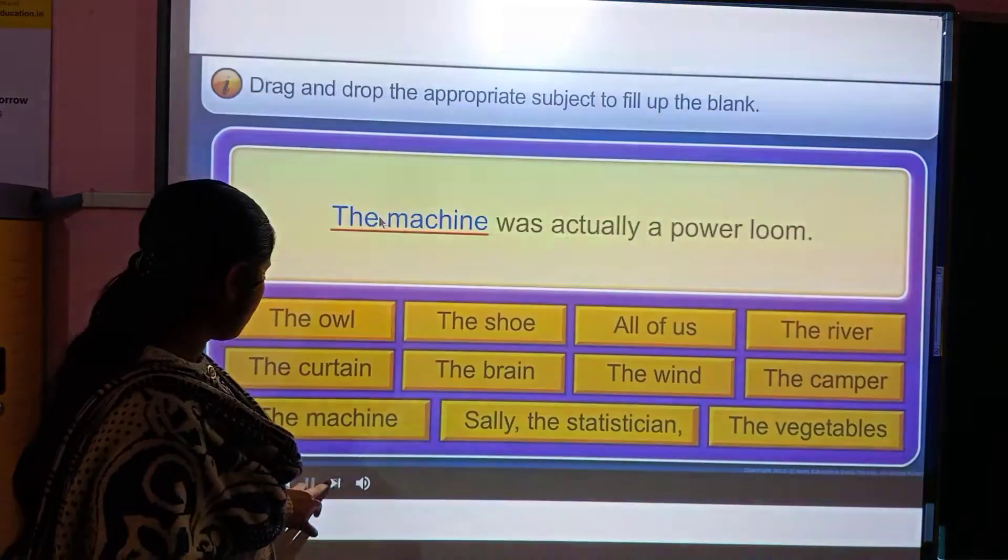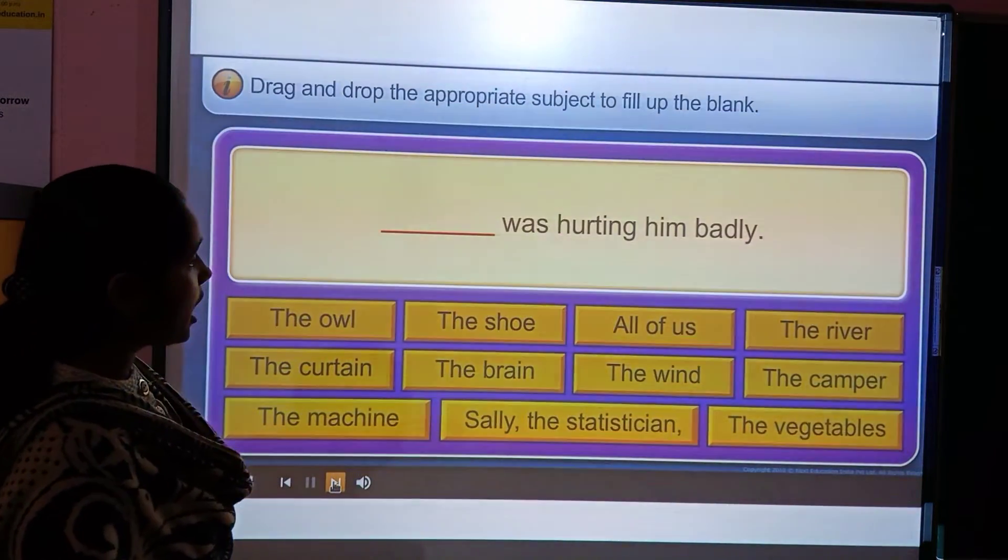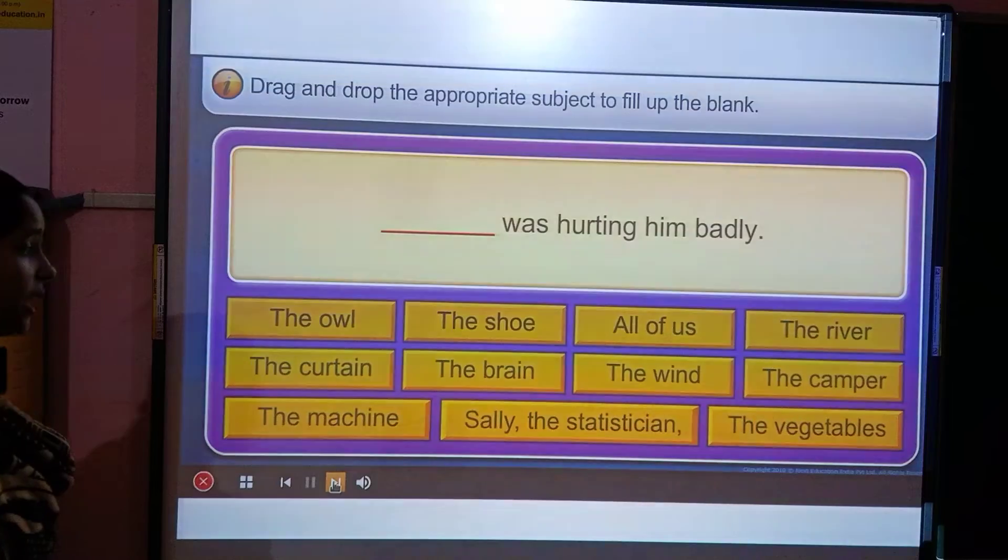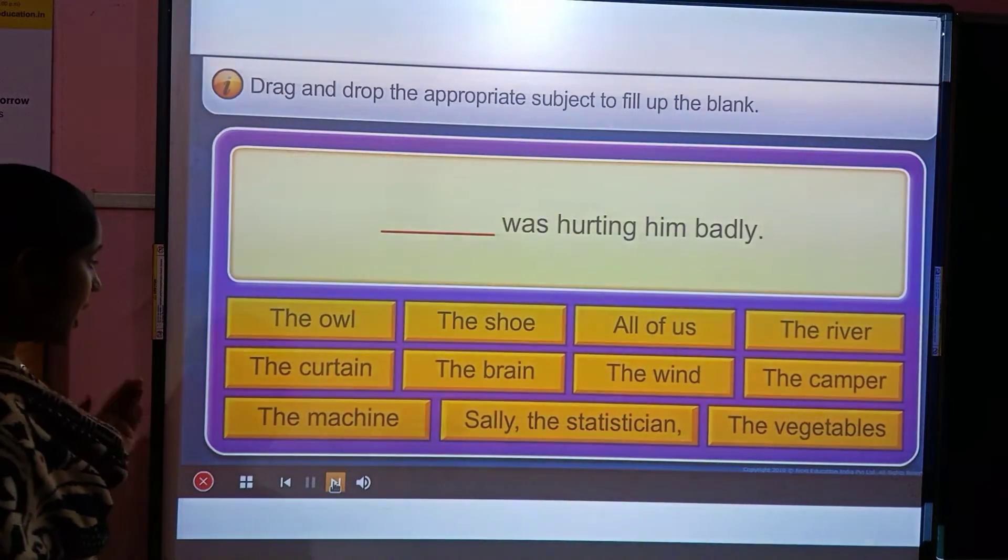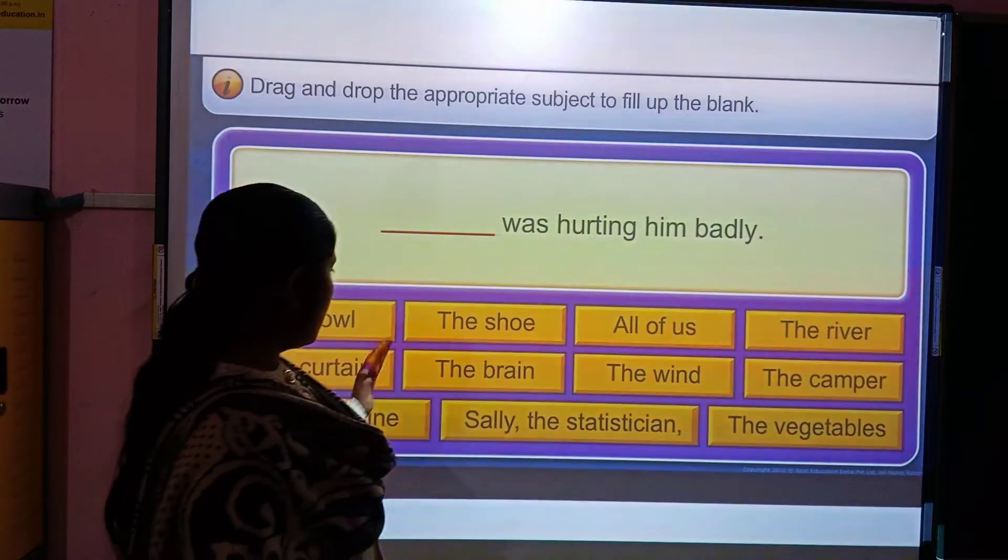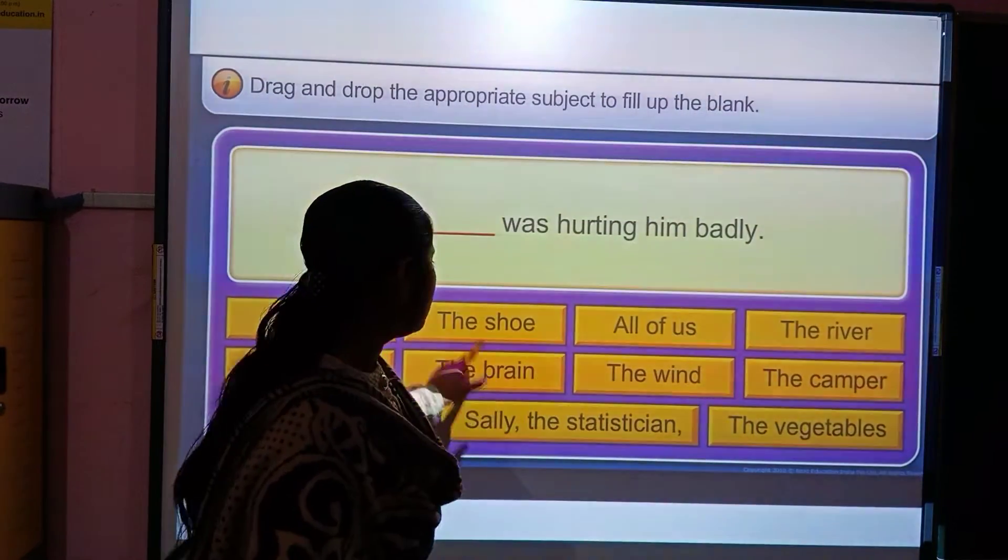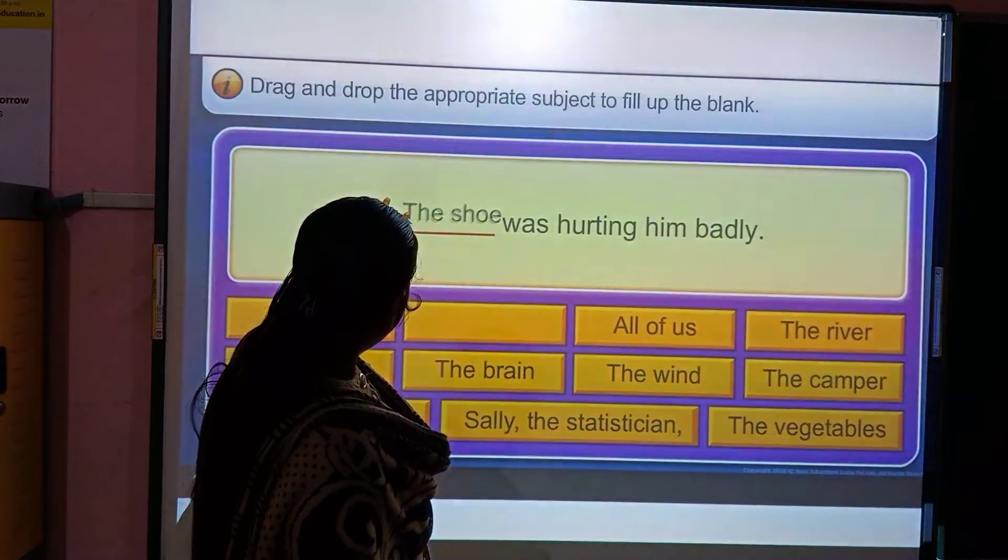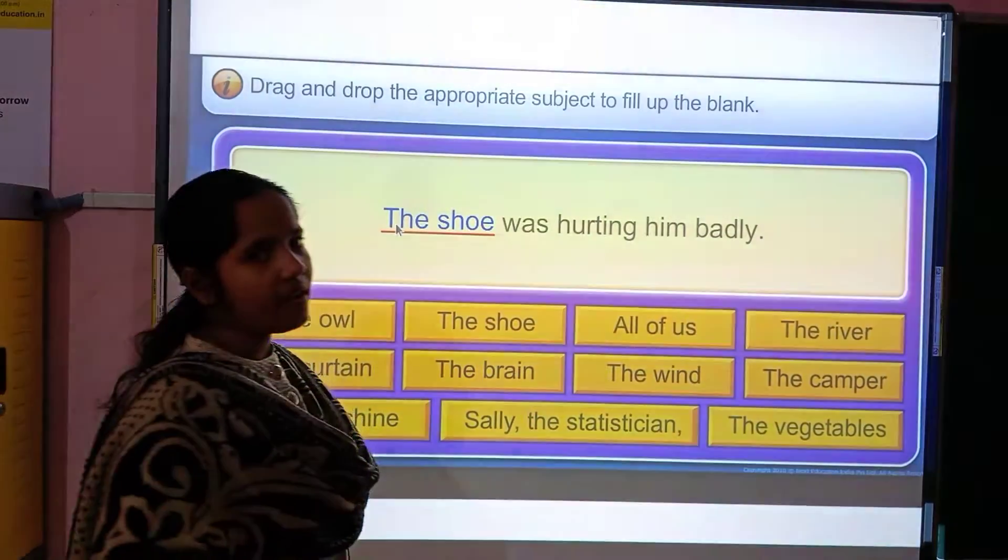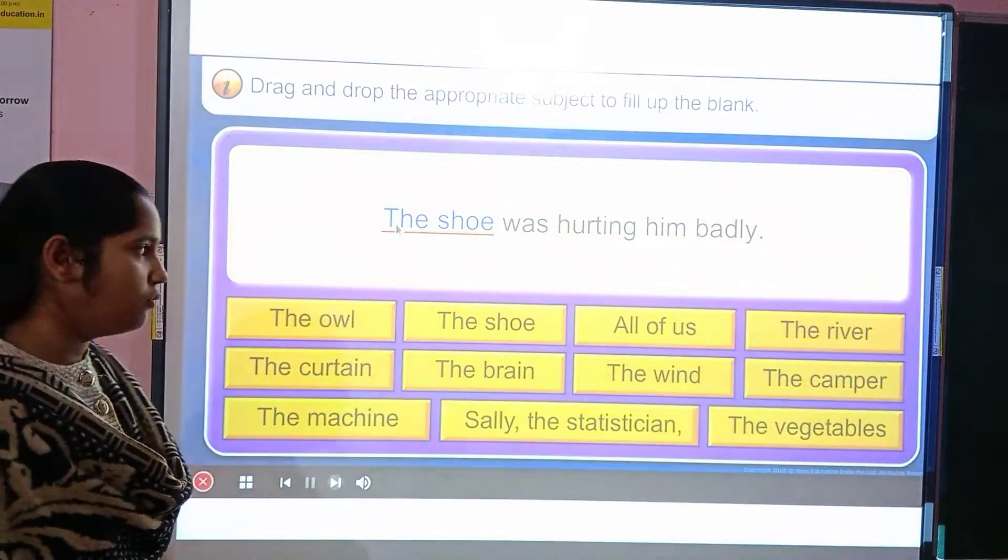Dash was hurting him badly. What was hurting him badly? The owl, the curtain, the machine, the shoe, the brain. Shall we say the machine? All of us are going to say, I think the shoe. Yes, that is the right answer. The shoe.